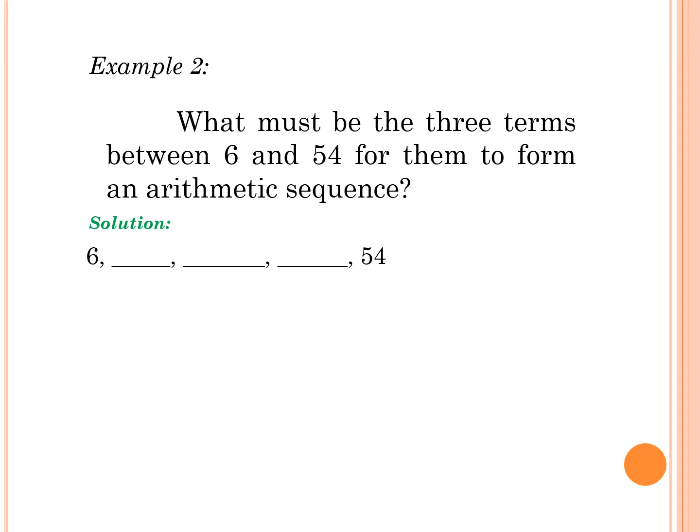Therefore, our last term is a_5. So let's recall the formula again for finding the nth term: a_n equals a_1 plus the quantity (n-1) times d. We need to find our d or common difference, same with our first example earlier.